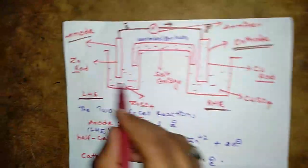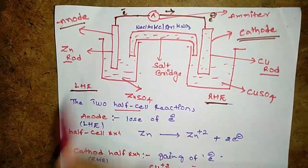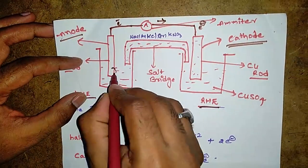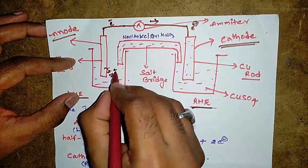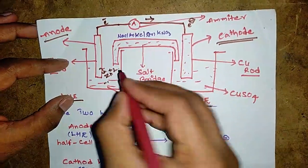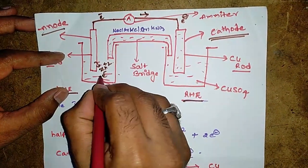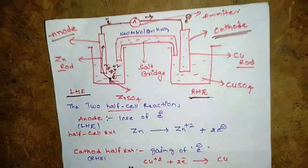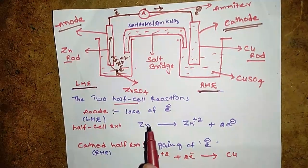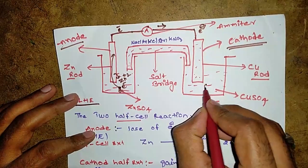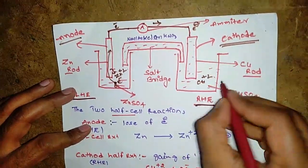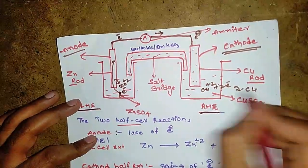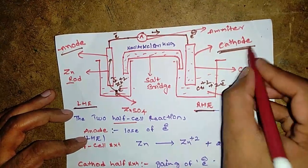The zinc rod is very active compared to copper, meaning it easily loses electrons. Zn²⁺ is formed when zinc loses its two electrons. These electrons move towards the cathode side. The copper²⁺ ions gain electrons to form copper on the surface of the cathode, which is the copper rod.